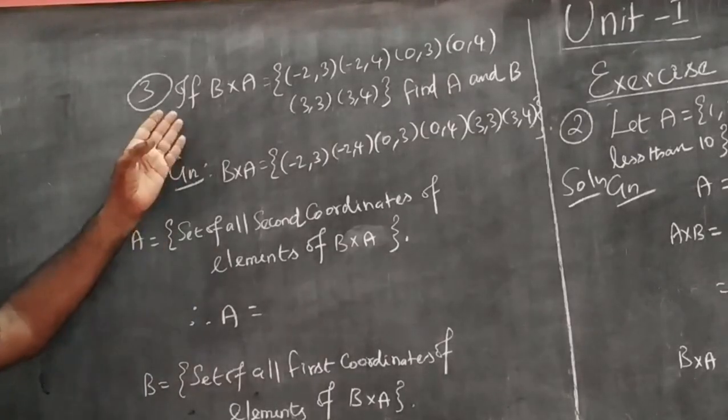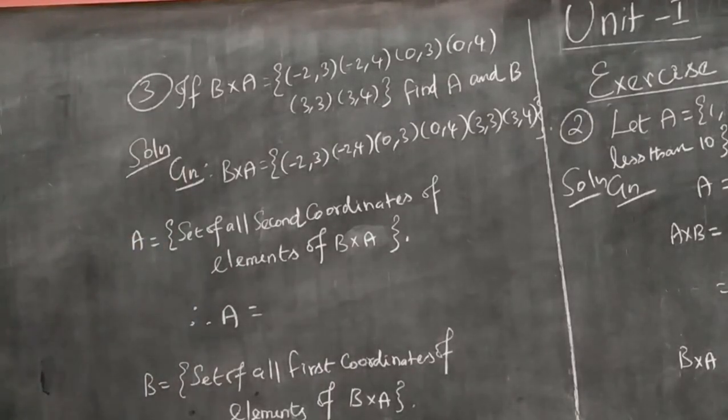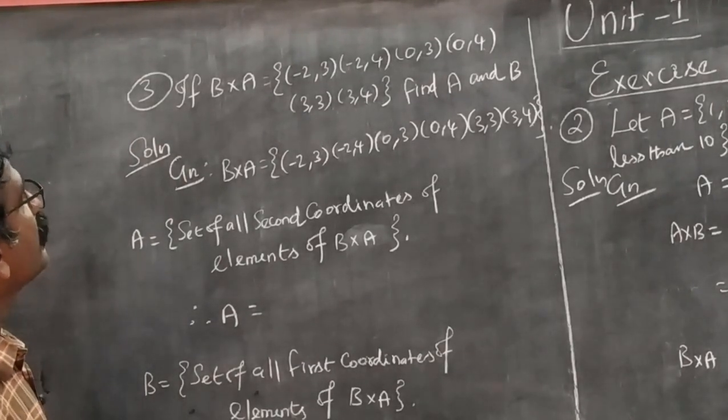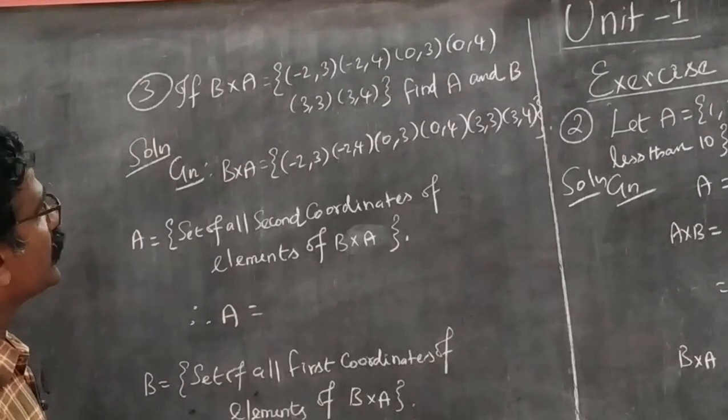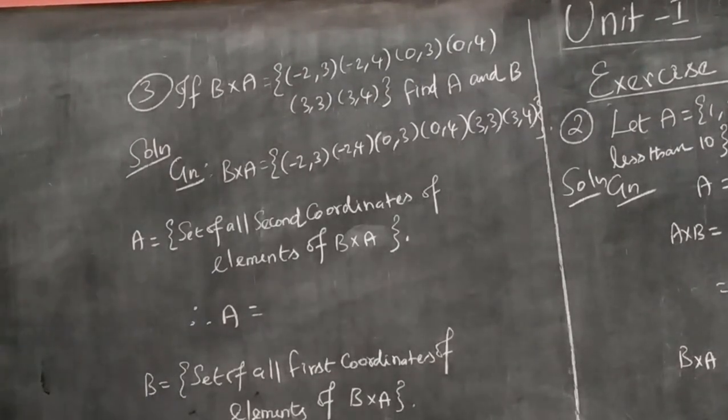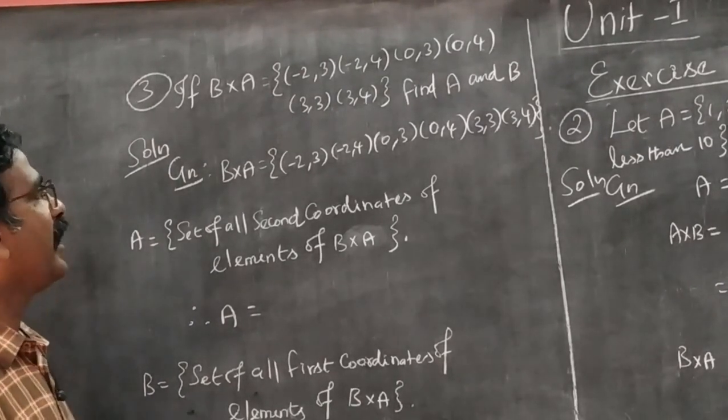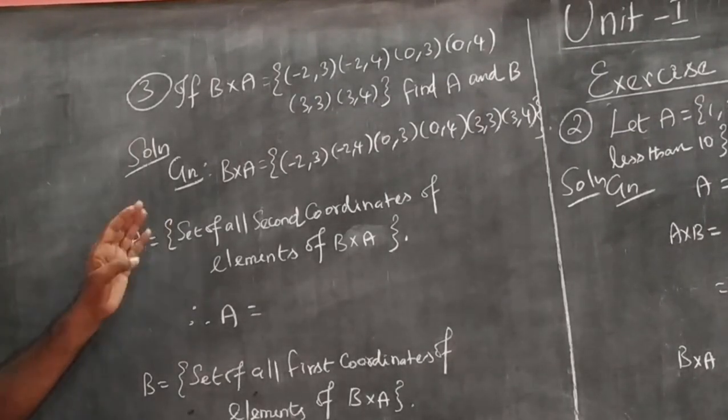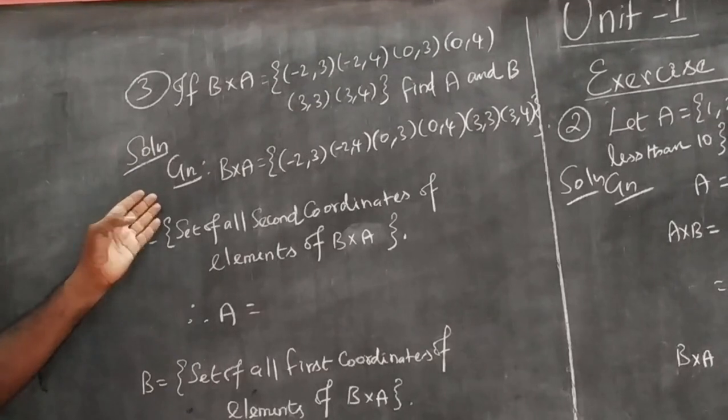Next problem: If B×A = {(-2,3), (-2,4), (0,3), (0,4), (3,3), (3,4)}, determine the solution. So let's get an example to this solution.